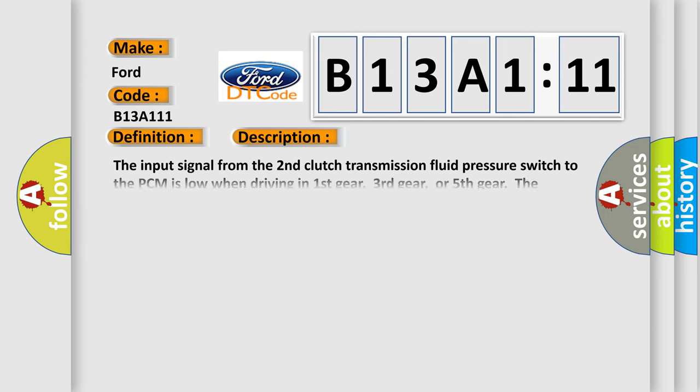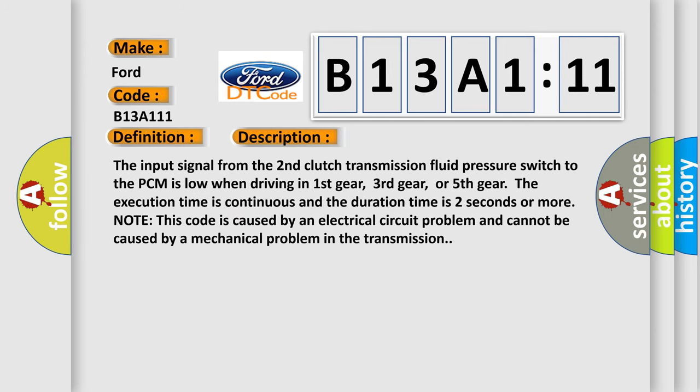And now this is a short description of this DTC code. The input signal from the second clutch transmission fluid pressure switch to the PCM is low when driving in first gear, third gear, or fifth gear. The execution time is continuous and the duration time is two seconds or more. Note this code is caused by an electrical circuit problem and cannot be caused by a mechanical problem in the transmission.